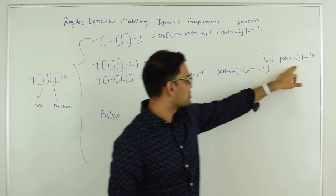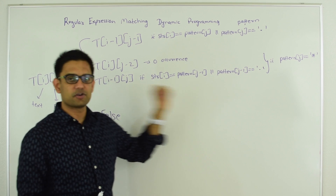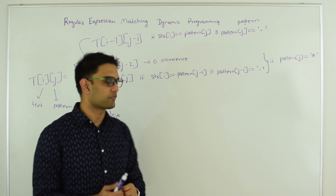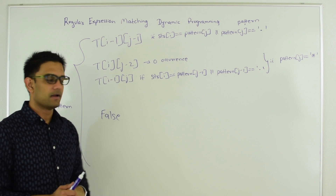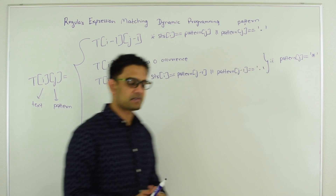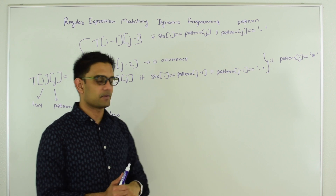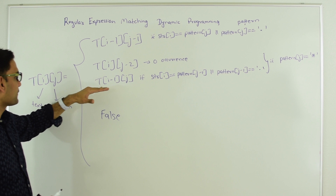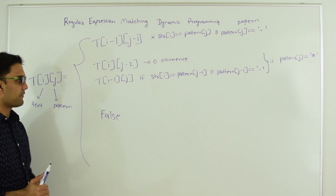If pattern[j] is star, we have two conditions. One: if we consider zero occurrences of the character right before star, we look at T[i][j-2]. Or we could have one or more occurrences of the character right before the star, but only if string[i] is the same as pattern[j-1] or pattern[j-1] is dot — in that case T[i][j] takes the value T[i-1][j]. Otherwise T[i][j] is false.